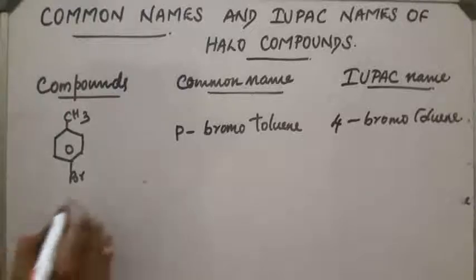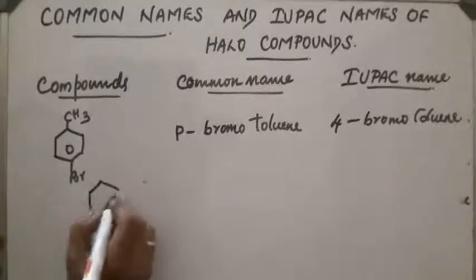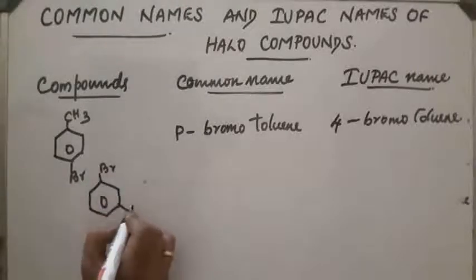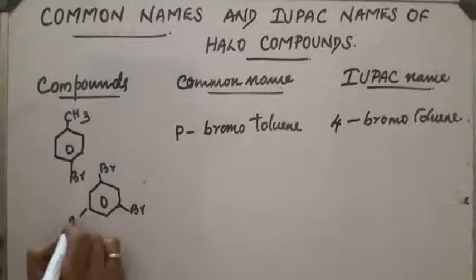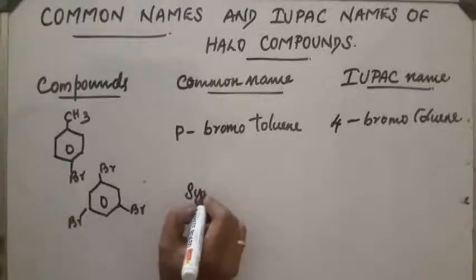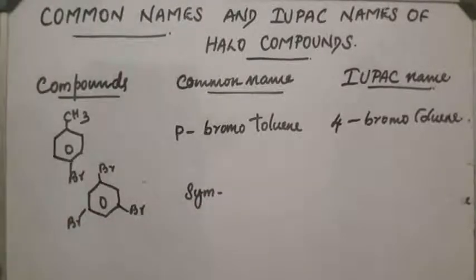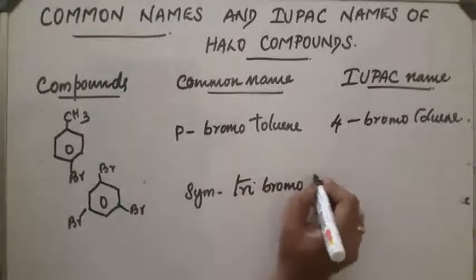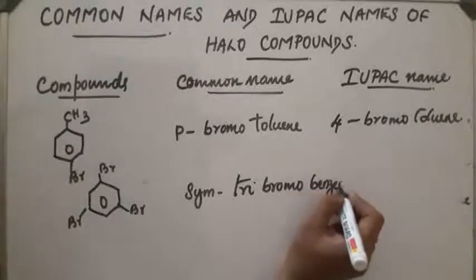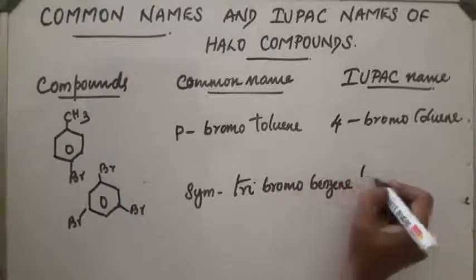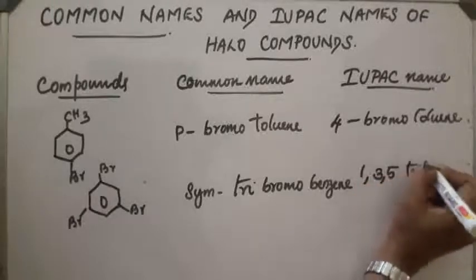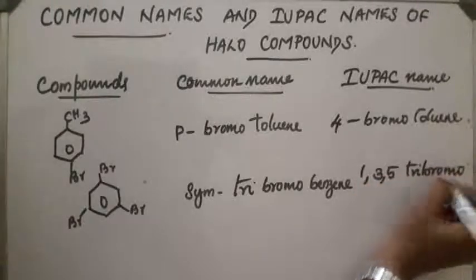Next: if three bromine atoms are attached symmetrically to benzene, we write the prefix sym. So the common name is sym-tribromobenzene. The IUPAC name uses positions 1, 3, and 5: 1,3,5-tribromobenzene.